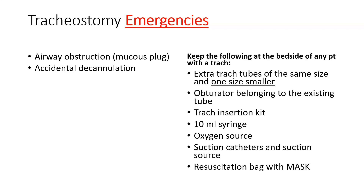Things you want to keep on hand include: an extra trache tube the same size and one size smaller, an obturator belonging to the existing tube, a trache insertion kit, an oxygen source, and suction canisters and suction source. If the patient is losing their airway from the trache, and you need to use an Ambu bag or resuscitation bag, use the mouth mask — not the one that hooks onto the trache. If the trache is blocked or not working, you want to ventilate through the mouth while someone else tries to insert the smaller tube or establish an airway.